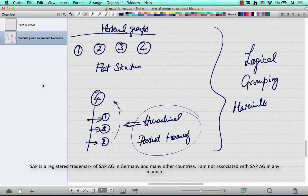Nevertheless, both material groups and product hierarchies are used in companies. Material groups are simpler because you don't need to put them in a hierarchy. Product hierarchies are a little more complicated, but they serve a purpose.